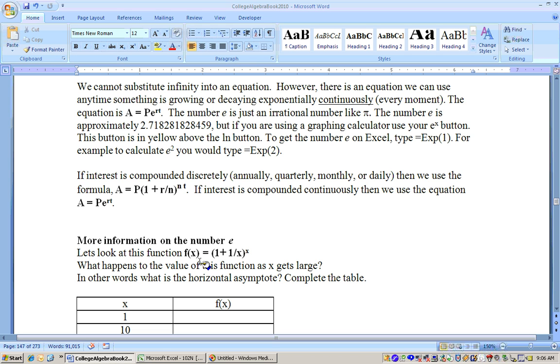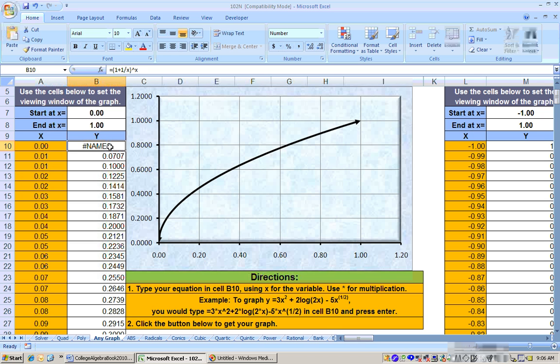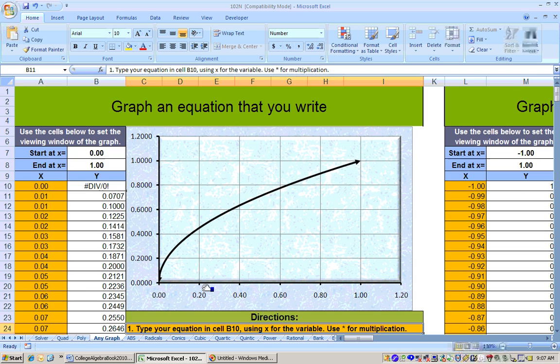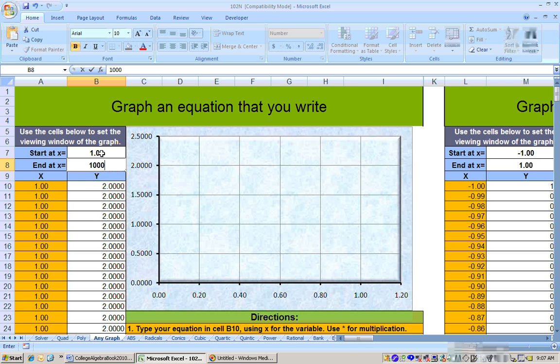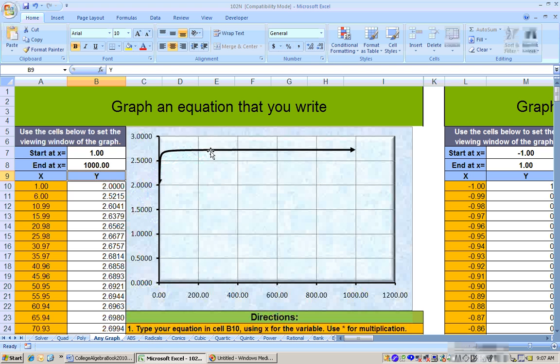Let's take a look where E might come up. Here's an example: f of x equals 1 plus 1 over x raised to the x. The easiest place to graph that would be the any graph sheet. I'm going to graph the function 1 plus 1 over x raised to the x. So I typed in equals 1 plus 1 over x raised to the x, hit enter. Then I'm going to go down here and click the get graph. I don't want to start at 0 because that would be division by 0. Let's start at 1 and go out to 1,000. I can see this graph is going up and leveling off like this. And what it's actually leveling off to is that number E.